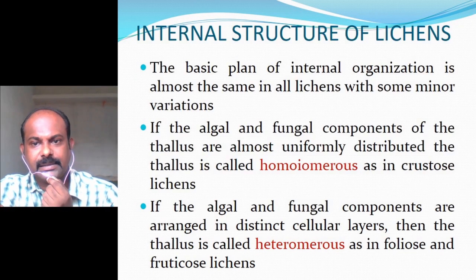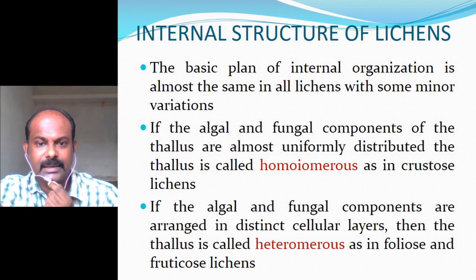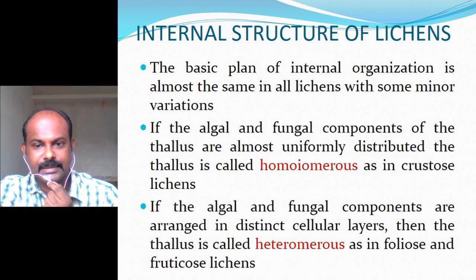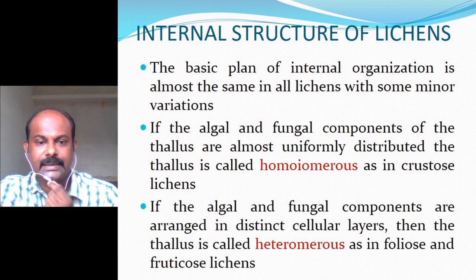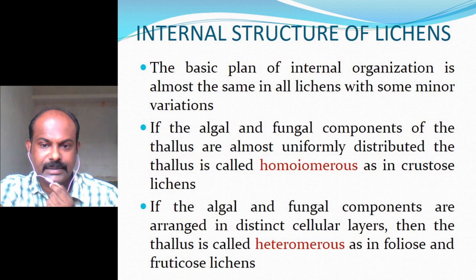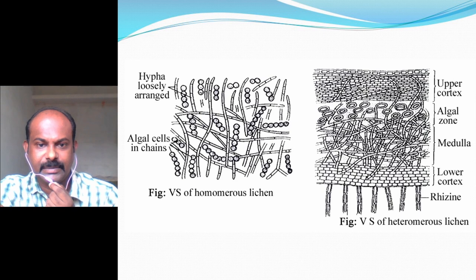Regarding the internal structure of lichens, the basic plan is almost the same in all types with just minor variations. If the algal and fungal components of the thallus are almost uniformly distributed, the thallus is called homeomerous, as in Crustose lichens. If arranged in distinct cellular layers, the thallus is called heteromerous, as in Foliose and Fruticose lichens.